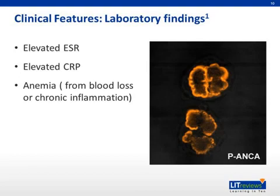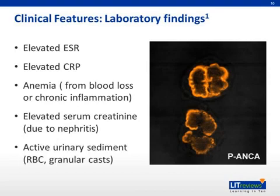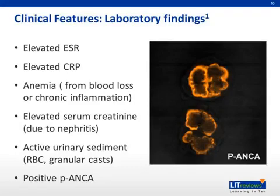Since MPA causes glomerulonephritis, patients present with elevated serum BUN and creatinine. Additionally, patients with MPA demonstrate active urine sediment with casts. Finally, the P-ANCA test is positive and usually due to the presence of anti-MPO antibodies. On the right is a nice picture of the peripheral staining consistent with a P-ANCA pattern that is seen in most patients with MPA.